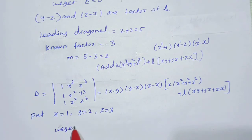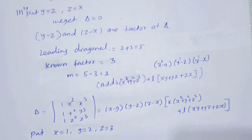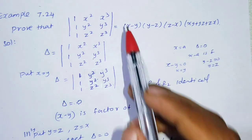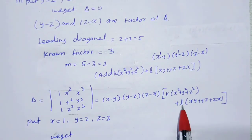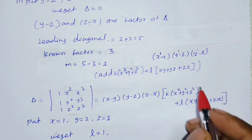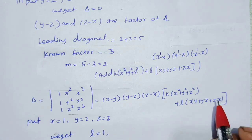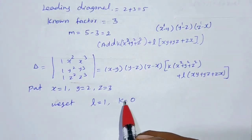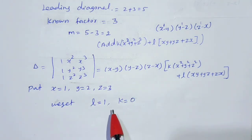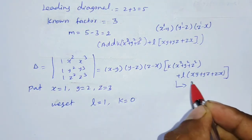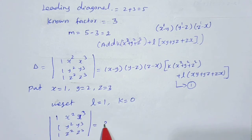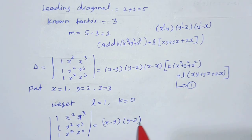By substituting and calculating, we can find the k value and the l value. The determinant of (1, x², x³), (1, y², y³), (1, z², z³) equals (x−y)(y−z)(z−x) multiplied by k(x²+y²+z²) plus l(xy+yz+zx). Solving, k equals 0 and the final answer is (x−y)(y−z)(z−x)(xy+yz+zx).